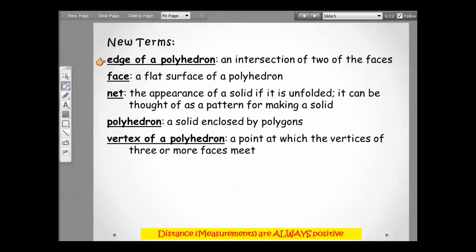The new terms you're going to be learning are: edge of a polyhedron, which is the intersection of two faces; a face, which is a flat surface of a polyhedron; a net, which is the appearance of a solid if it's unfolded and can be thought of as a pattern for making a solid; and a polyhedron, which is a solid enclosed by polygons.